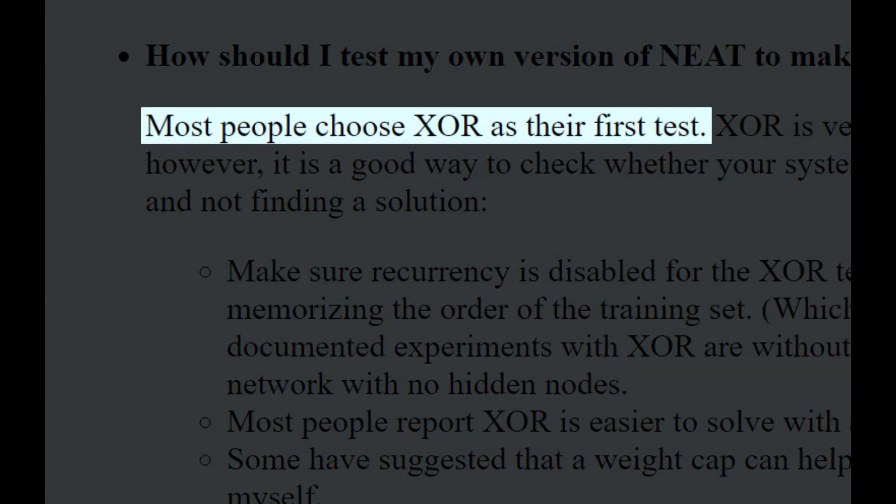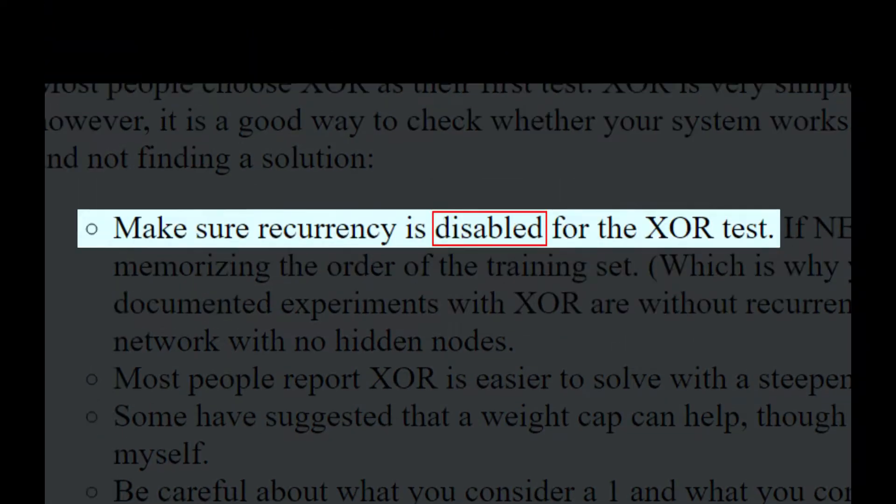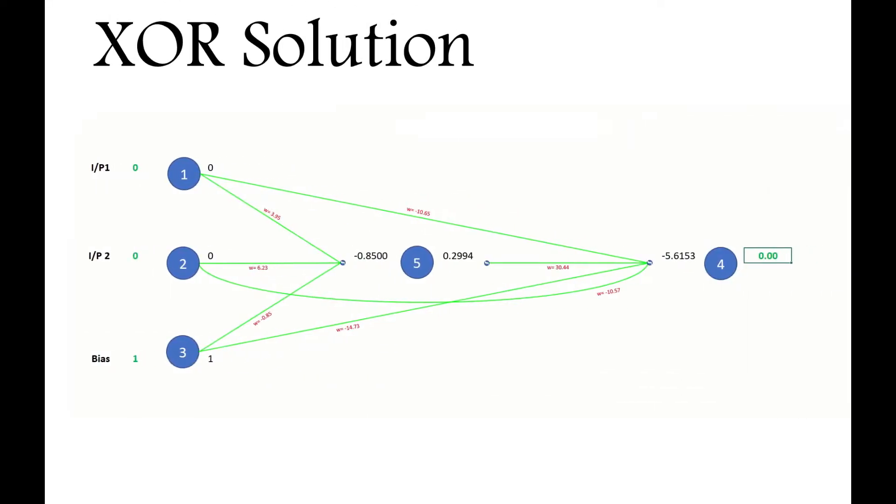So what about recurrent connections within the exclusive OR solution? Should we use them? Let's first look at a one hidden node exclusive OR solution and how it operates with no recurrent connections present. I've brought it into Excel and applied the weights and connections, as well as the inputs and outputs from each node in the network.